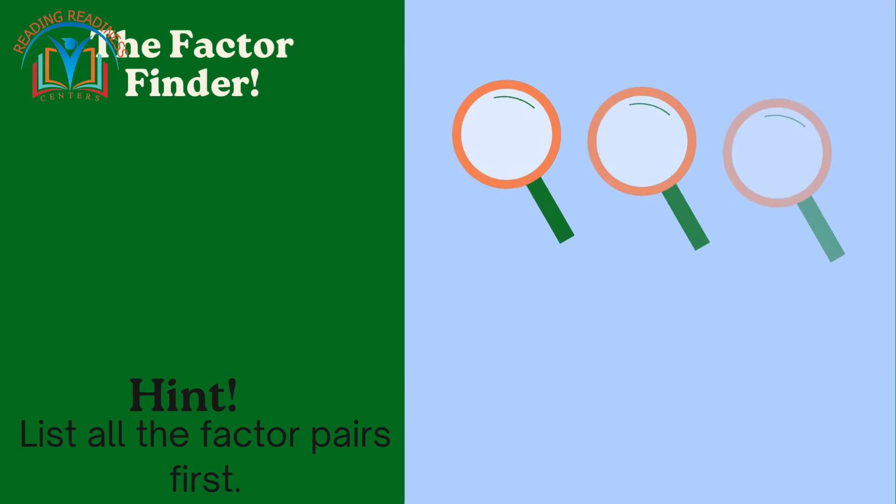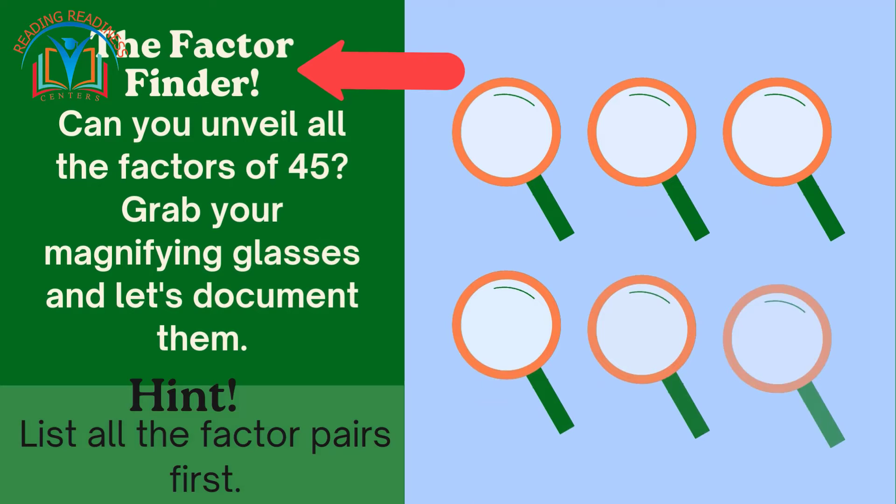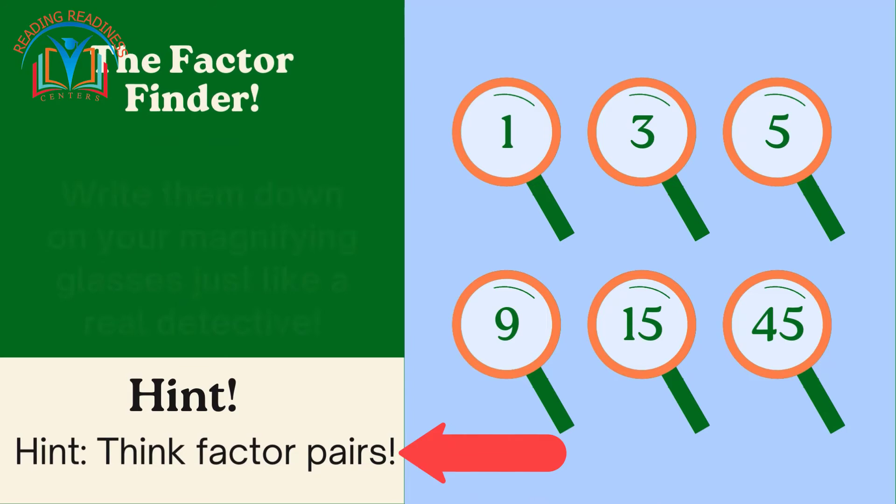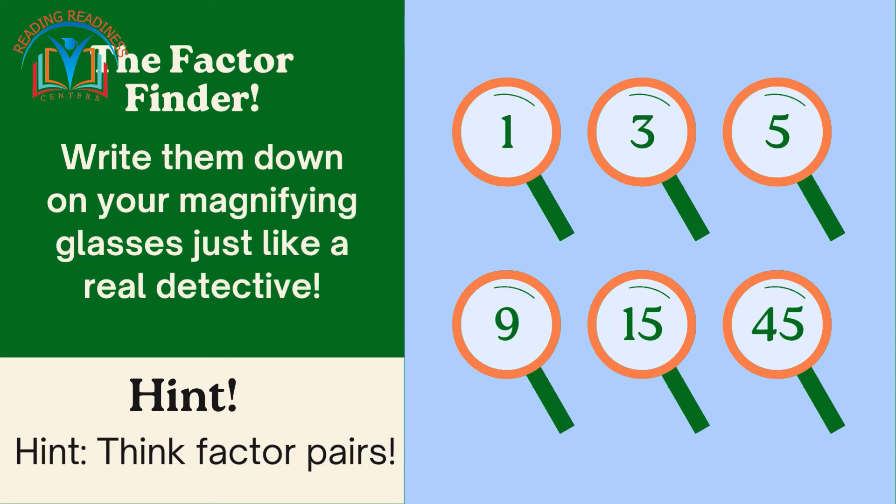Now, an engaging activity awaits: The Factor Finder. Can you unveil all the factors of 45? Grab your magnifying glasses and let's document them. Hint: list all the factor pairs first. Think factor pairs. Write them down on your magnifying glasses, just like a real detective.